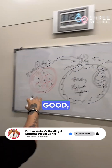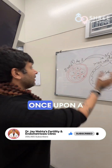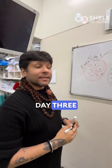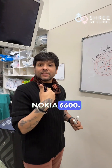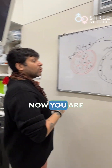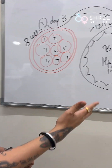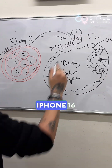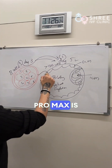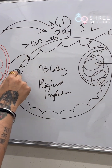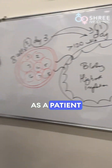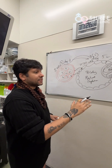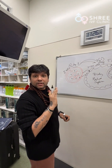Nothing is good, nothing is bad. Once upon a time people were only making day 3 embryos — that is like Nokia 6600. Now you are at iPhone 16 Pro Max. iPhone 16 Pro Max is like day 5 embryos. This is the bottom line as a patient which you should understand and remember.